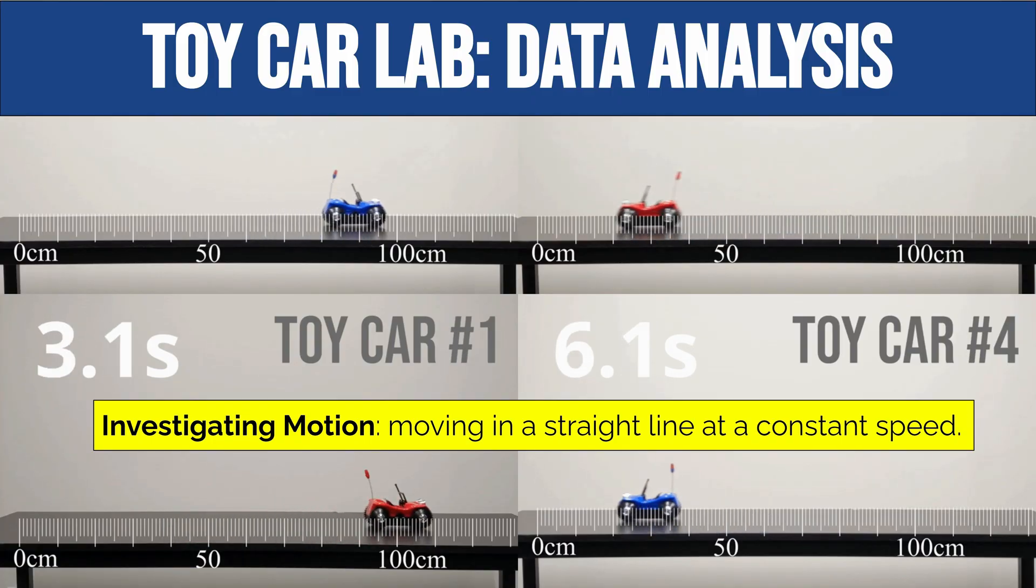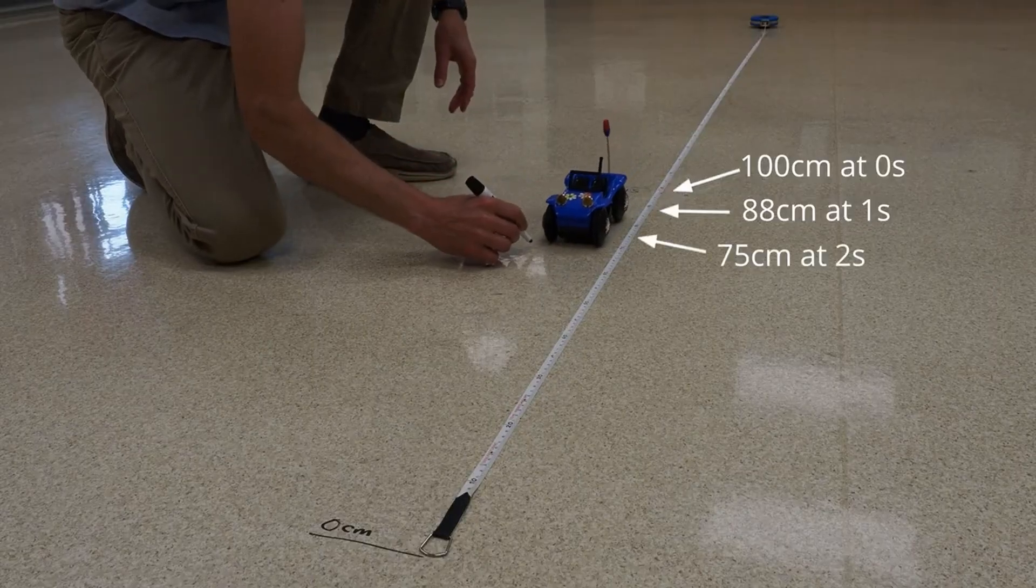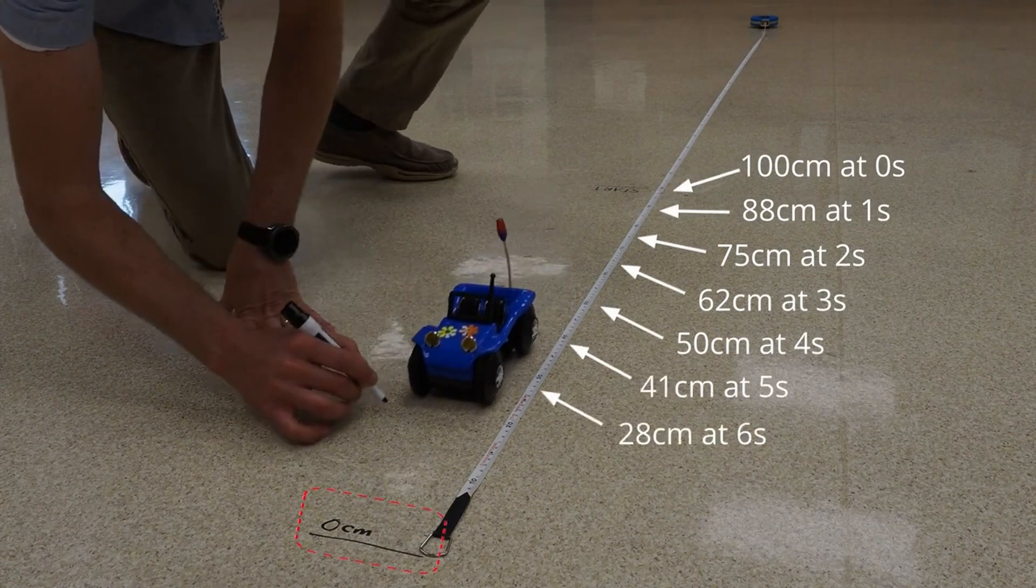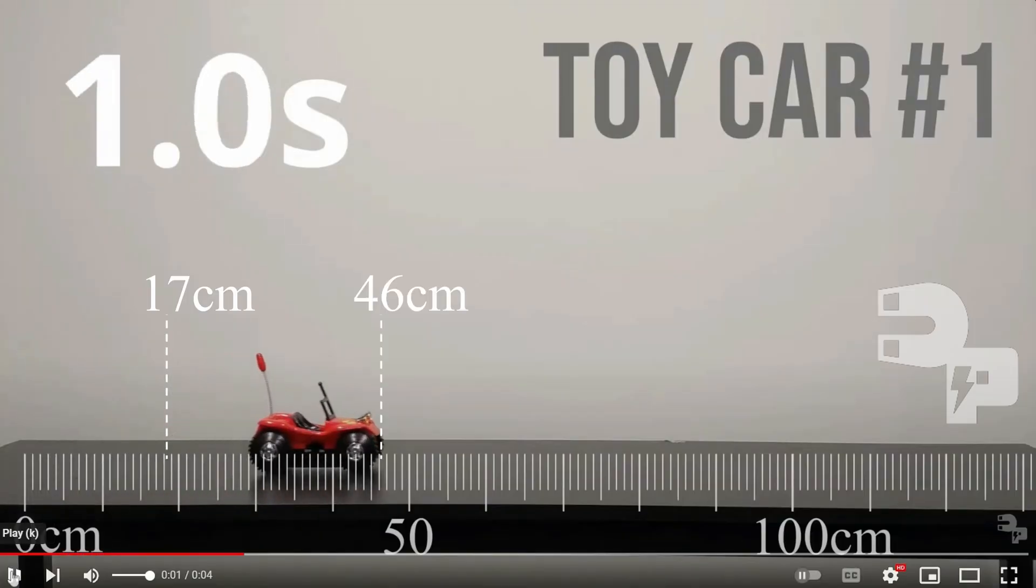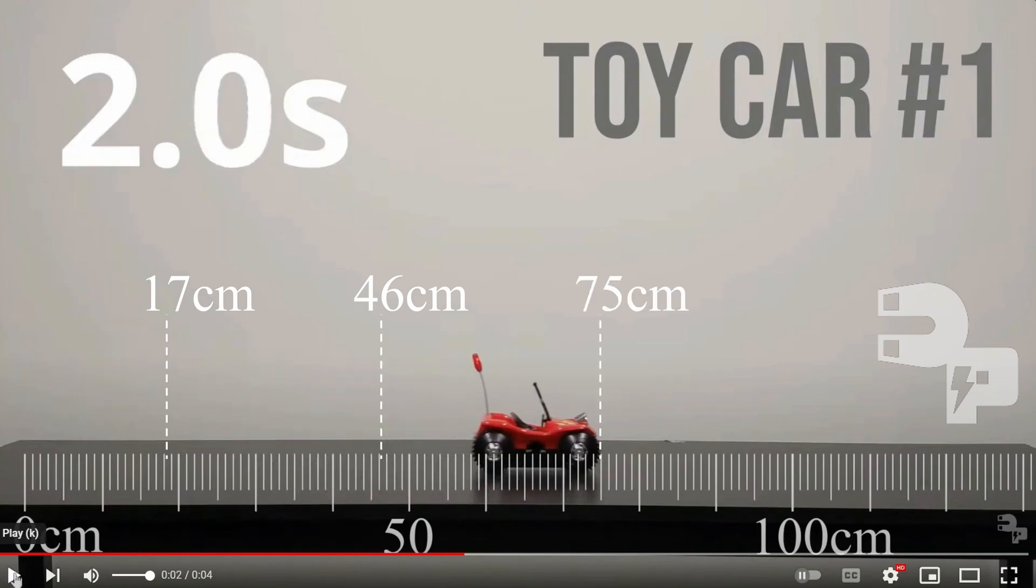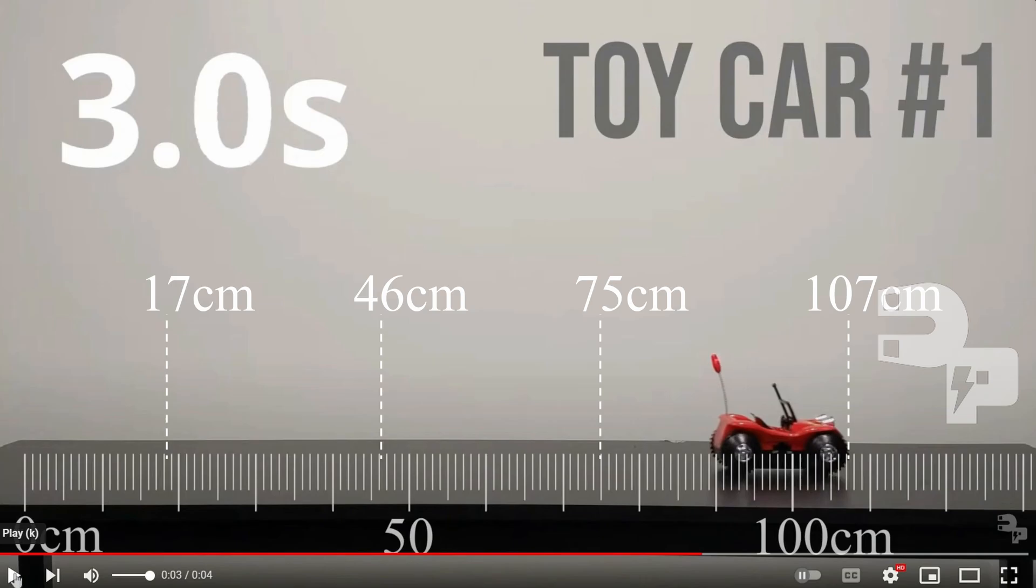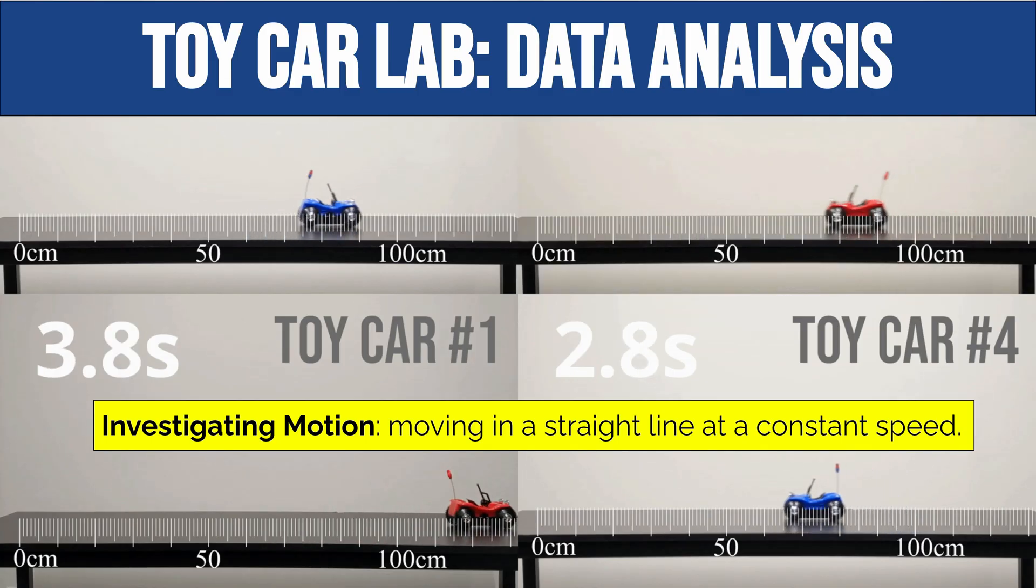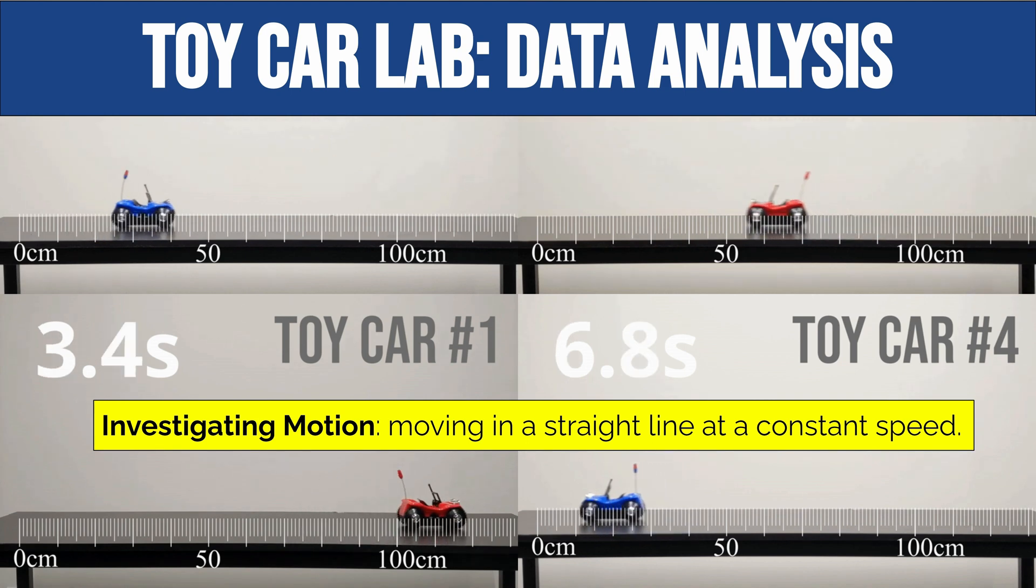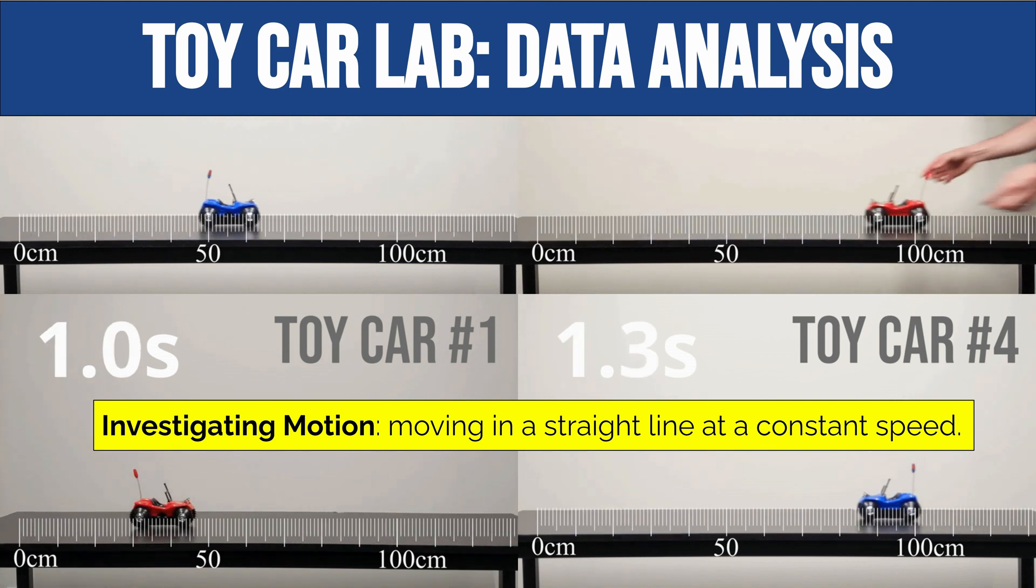In order to collect that data, you either used cars out in the hallway to measure where the car was at specific times, or you used YouTube videos and pausing the video allowed you to figure out the position of the car at specific times. You collected position and time values for either just a red or a blue car, or you did a red car, a blue car, and a third unique trial.